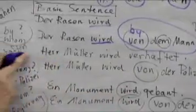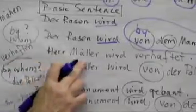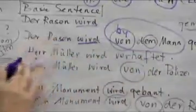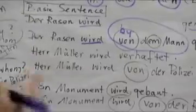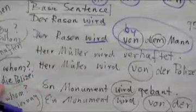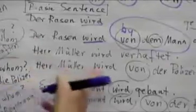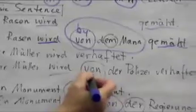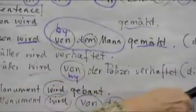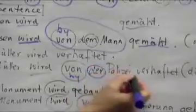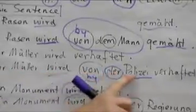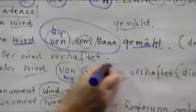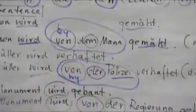Now let's look at the next sentence. We are going to use the word verhaften, which means to arrest someone. Herr Müller wird verhaftet. Herr Müller is being arrested. We don't know by whom, but we'll find out. So we're going to ask, by whom is he being arrested? And the word is die Polizei, by the police. So, Herr Müller wird von der Polizei verhaftet. Mr. Müller is being arrested by the police.